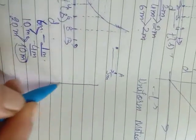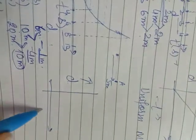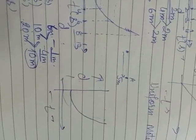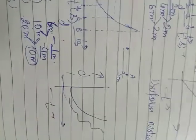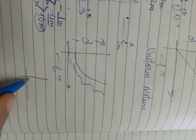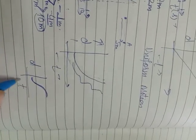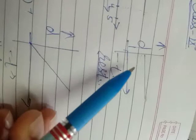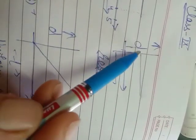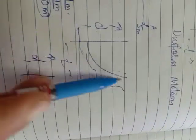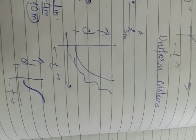So if we get a distance-time graph of this curved shape, the object follows non-uniform motion — whether it starts from the distance axis or the time axis. Now, giving a quick review: if the distance-time graph is parallel to the time axis, the object is at rest. If we get a straight line with some slope, it is uniform motion. If we get any curved line, the motion of the object is non-uniform in nature.